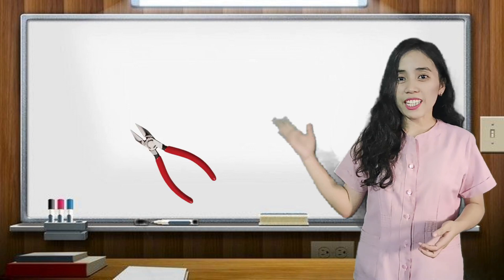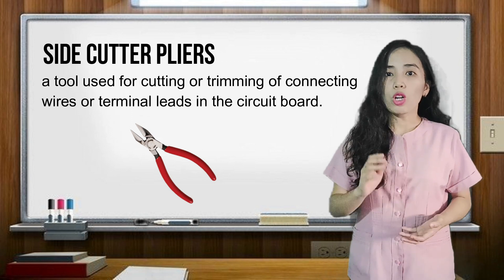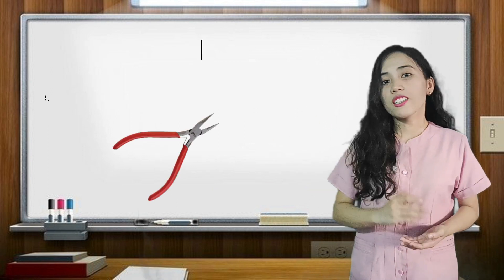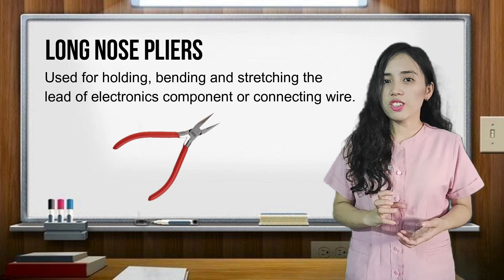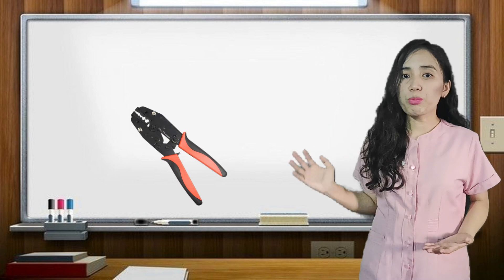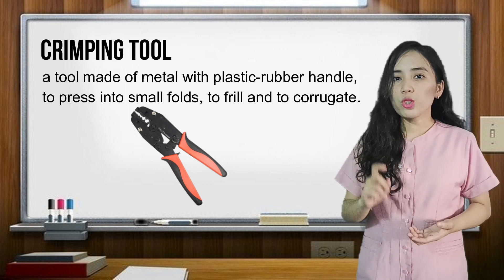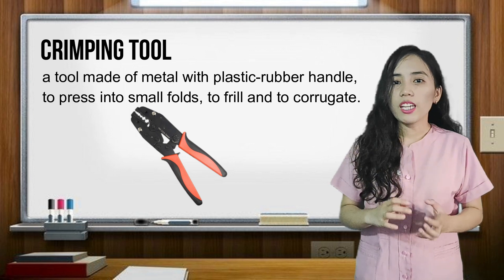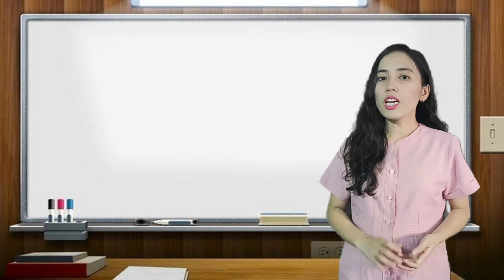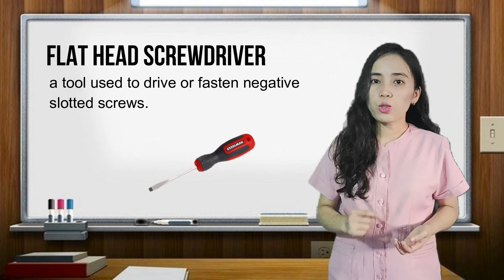First, we have the side cutter pliers. It is a tool used for cutting or trimming connecting wires or terminal lengths in the circuit board. Next, we have the long nose pliers. It is used for holding, bending, and stretching the lengths of electrical components and connecting wires. We also have the crimping tool. It is a tool made up of metal and a plastic rubber handle that is used to press into small folds, to crimp and to corrugate. And we have the cutter, a tool used for cutting wires. And here we have the flat-end screwdriver, used to drive or fasten negative flat-end screws.